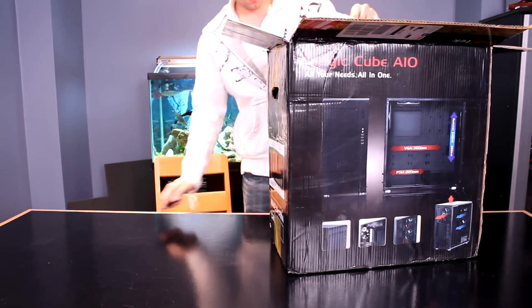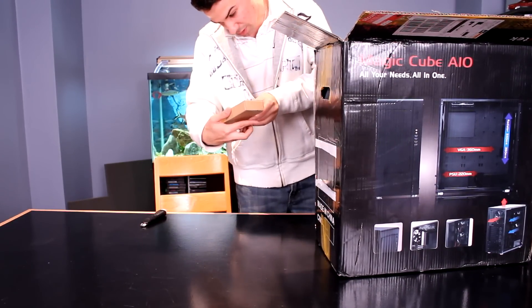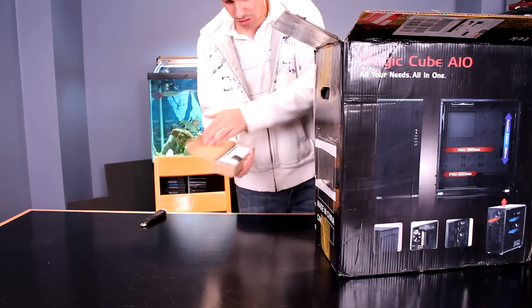When we open it up, first thing we find is the accessories box. Gotta love the accessories box. It says the MagicCube AIO, so let's take a look at it first.